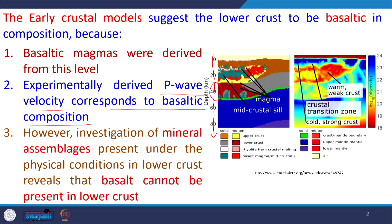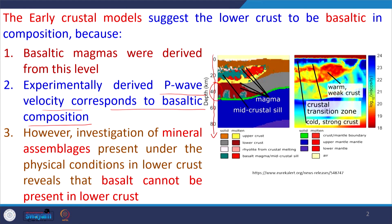There are different experiments to determine the lower crustal composition. The P wave velocity — that is the seismic wave — along with P wave, S wave, L wave, and R wave are seismic waves derived from earthquakes. The P wave is called the body wave, as well as the S wave. The P wave velocity corresponding to basaltic composition indicates the lower crustal composition is of basaltic nature.